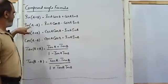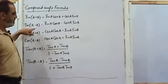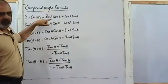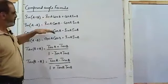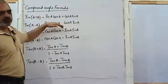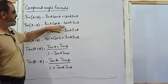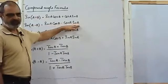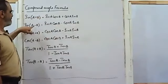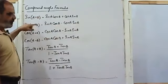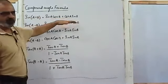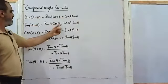Sine of (A minus B), the difference of two angles, will be sine A cos B — same terms as the previous formula — only the difference is a minus sign between the two terms: sine A cos B minus cos A sine B. So when we have addition of two angles there is a plus sign, and in case of minus we have a minus sign.